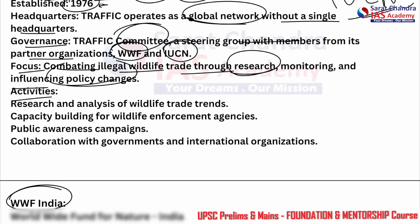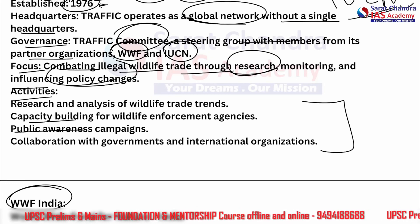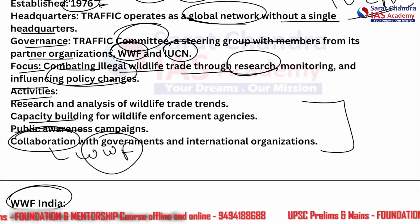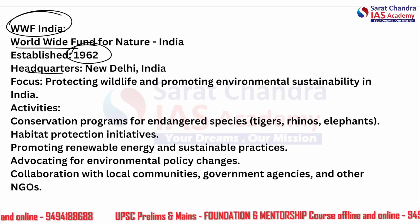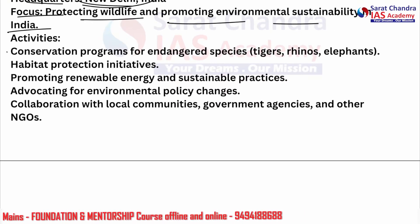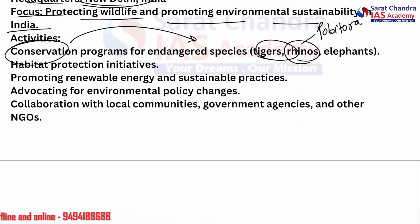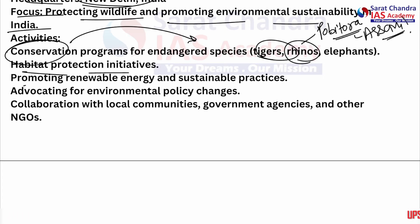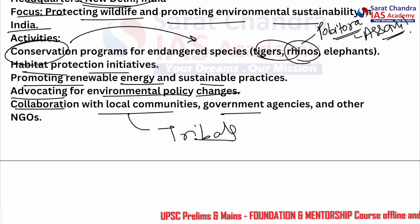WWF India — World Wide Fund for Nature India — was established in 1962, with headquarters in New Delhi. Its focus is on protecting wildlife and promoting environmental sustainability in India. Activities include conservation programs for endangered species like tigers and rhinos — we recently read about Pobitora Wildlife Sanctuary in Assam — habitat protection initiatives, promoting renewable energy and sustainable practices, advocating for environmental policy changes, and collaboration with local communities including tribals, government agencies, and other NGOs.